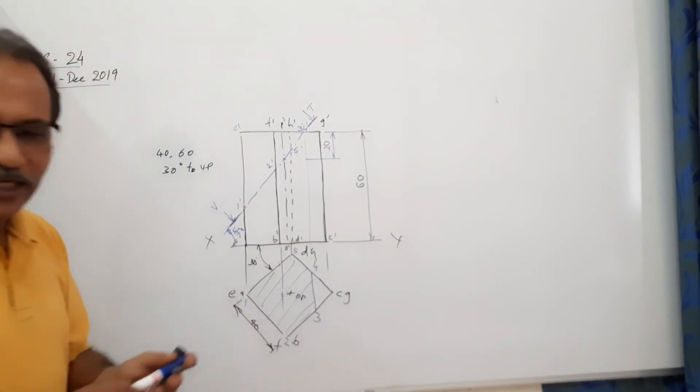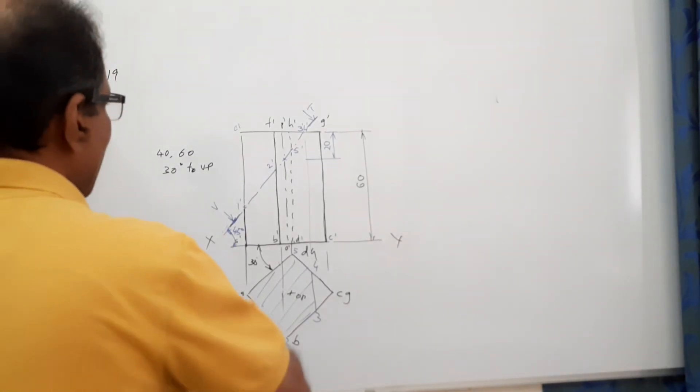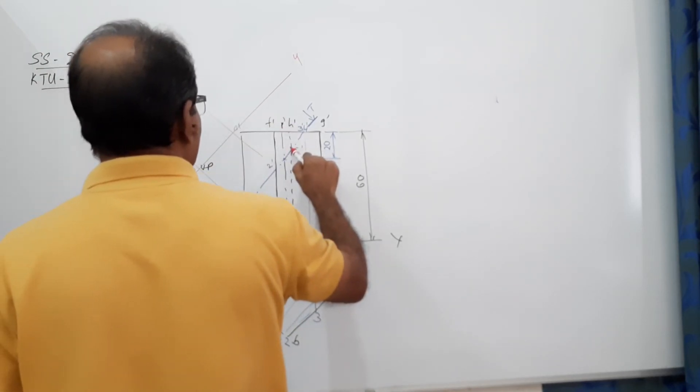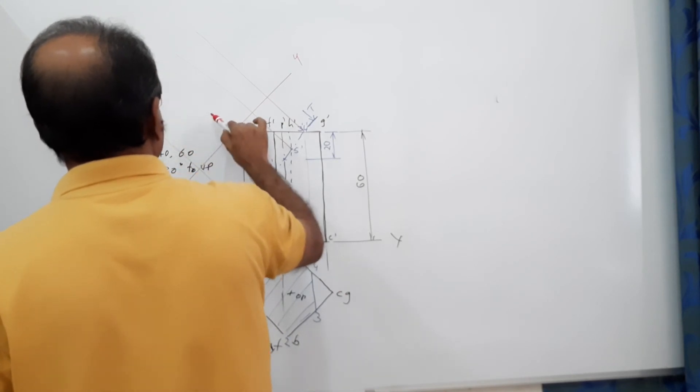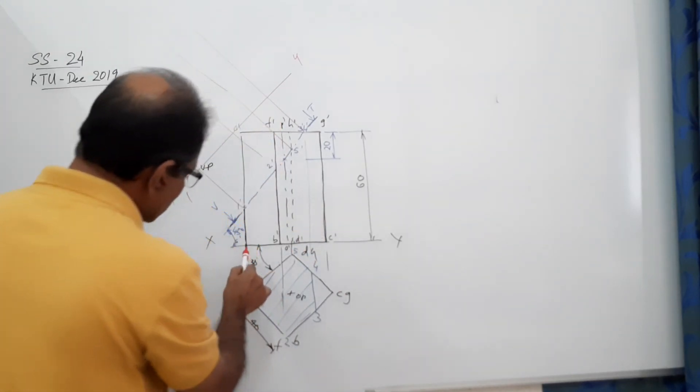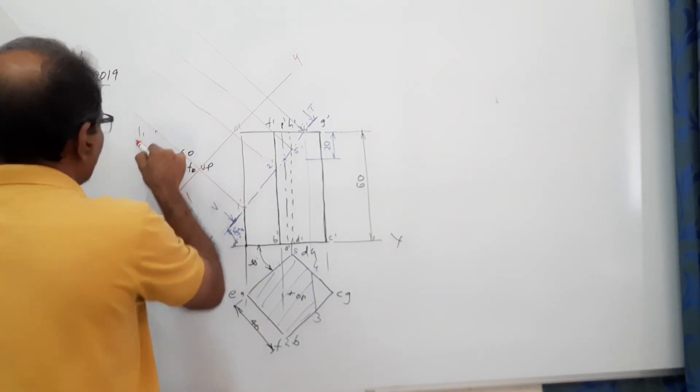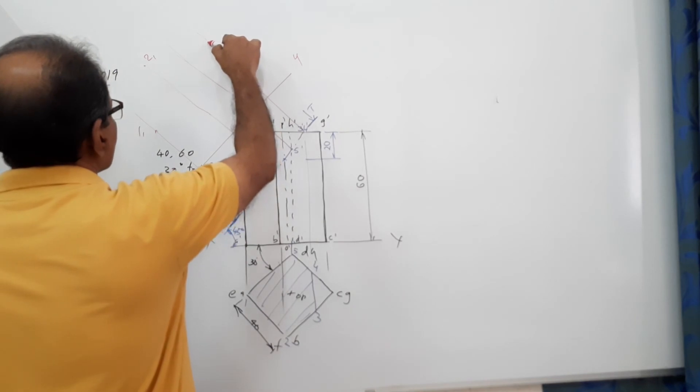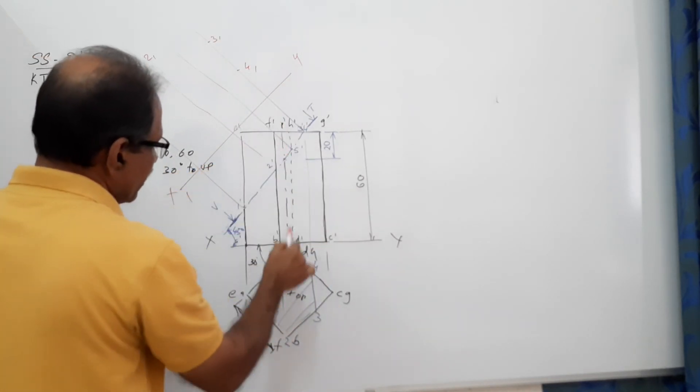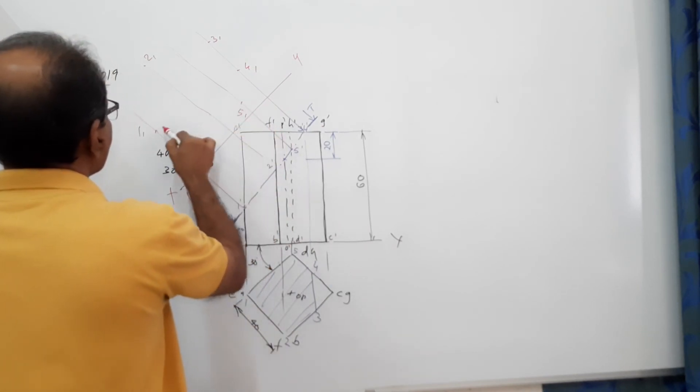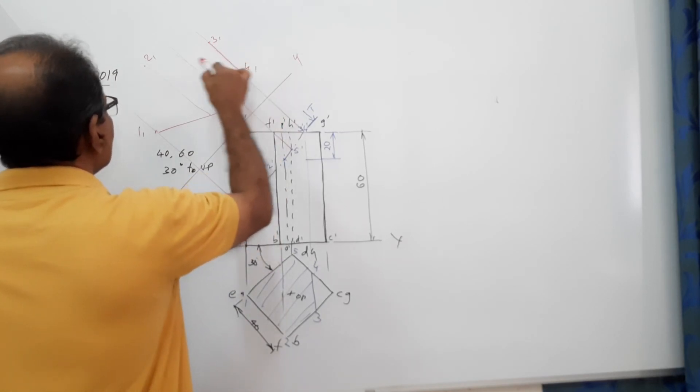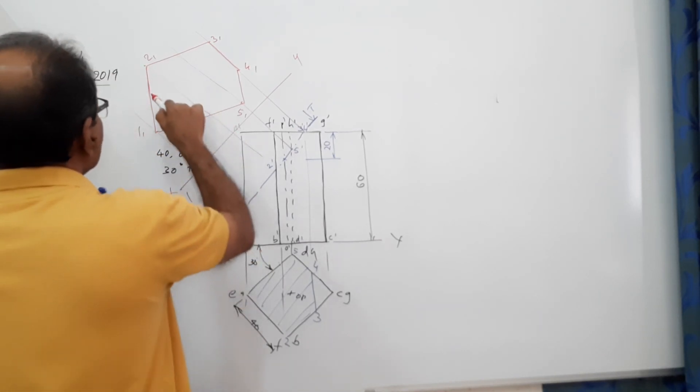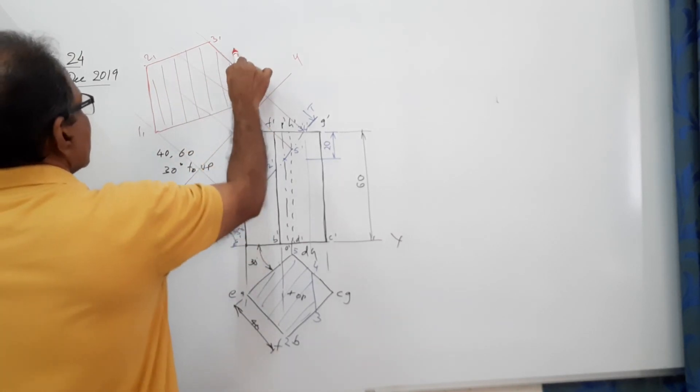To draw the true shape, we draw a line parallel to the cutting plane, X1Y1, and draw projectors perpendicular to them through all points of the cutting plane. One is this much below XY, take the distance and mark - you get one-one. Two is this much below XY, on the projector through two-dash you get two-one. Three is this much below, you get three-one. Four is this much below, four-one. Five is this much below, five-one. Connect them.